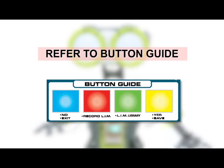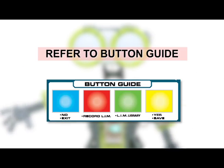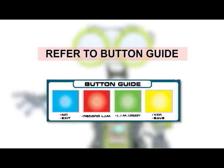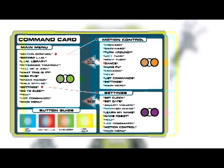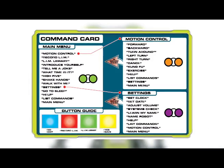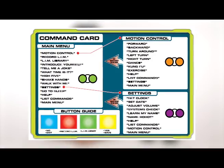If you cannot remember which button to push, refer to the cheat sheet on the command card. You can access LIM through the main menu. Just say Record LIM.